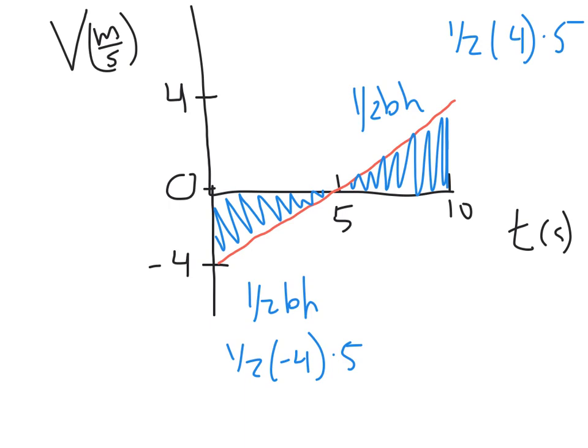And so, multiplying across, I get 20 times 1/2, or 10 meters of displacement on this triangle. And I get a negative 10 meters of displacement on this triangle.